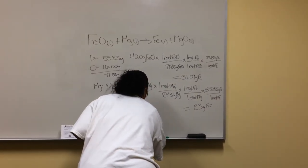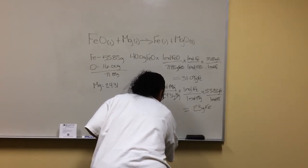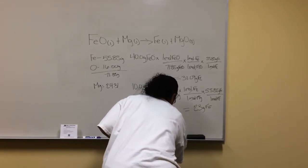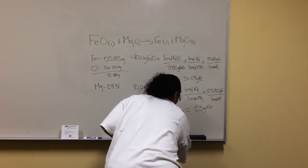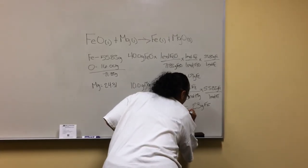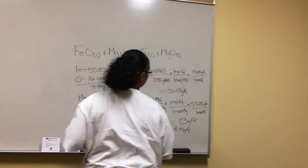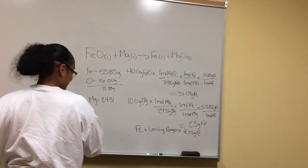Making iron limiting reagent at 23 grams of Fe. That is the problem.